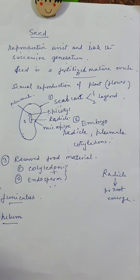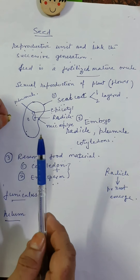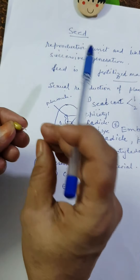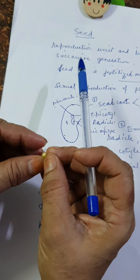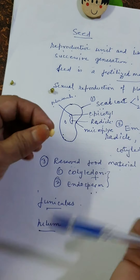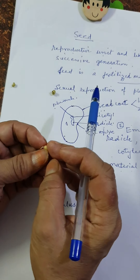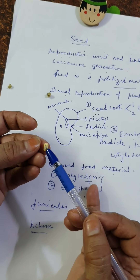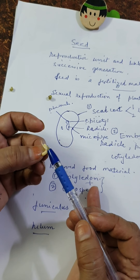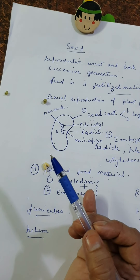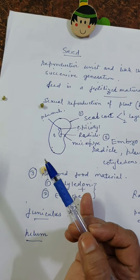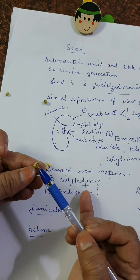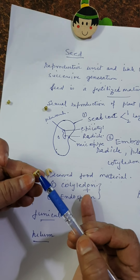Now let's identify the parts of an actual seed. This is a germinated bean. The green protective outer layer is the seed coat, which protects the embryo. The cotyledon and the radicle are visible — the root has germinated from the radicle. Since we have two cotyledons, this is a dicot seed. In the next class, we will discuss monocot and dicot seeds.